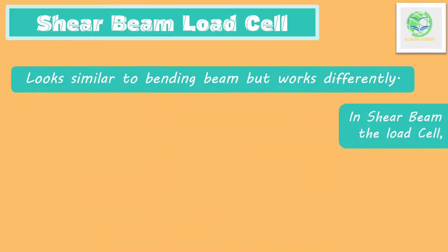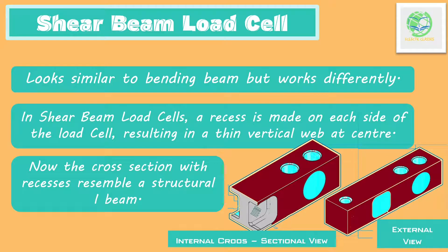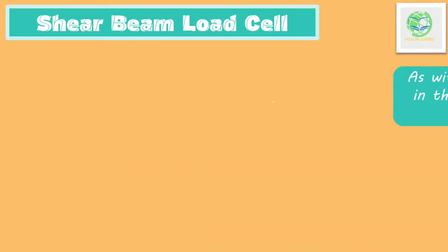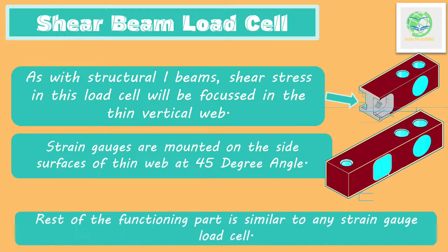Shear beam load cells look similar to bending beam load cells but are very different in working. In a shear beam load cell, a recess is made on each side of the load cell as shown in the diagram, resulting in a thin vertical web in the center. With this recess in place, the cross-sectional appearance becomes similar to a structural I-beam. As with a structural I-beam, the shear strain is focused in the thin vertical web. Strain gauges are then mounted on the thin web side surfaces at a 45-degree angle to detect strain. The rest of the functioning is similar to any strain gauge load cell.